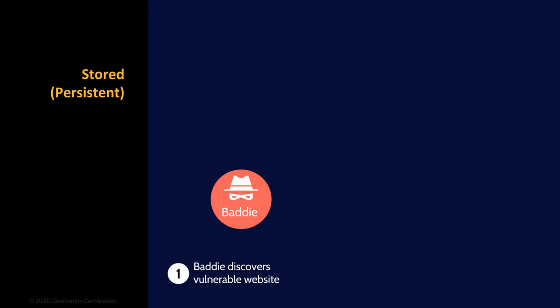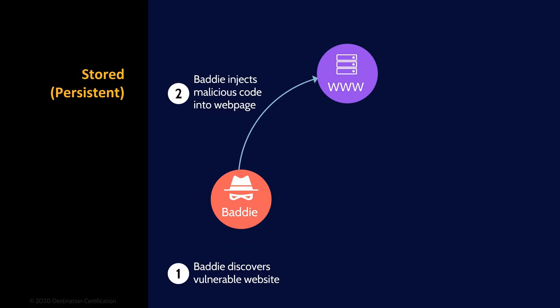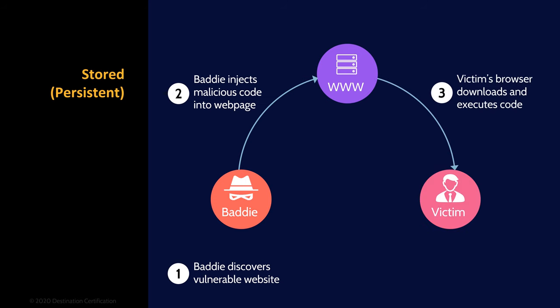Stored cross-site scripting: an attacker discovers a vulnerable website and injects their code into the web application in such a way that the code is stored on the server and displayed to every subsequent user that visits the webpage. This can be achieved by entering JavaScript code into a comment field on a forum or comment section. The attacker's code is stored on the server, and every subsequent user's browser will download the HTML page with the JavaScript code embedded, parse the page, and execute the malicious code. Stored cross-site scripting is persistent — every subsequent user will be affected once the attack has occurred.